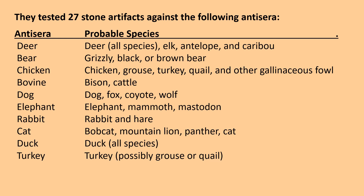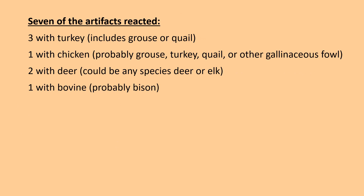They tested 27 of the stone artifacts against antisera listed on the left, with the probable species that would be flagged shown on the right. Not all of these are species that would have been found in South Carolina prehistorically. Seven of the artifacts reacted: three with turkey antiserrum, which includes grouse or quail; one with chicken antiserrum — chickens were not here, but it could signify grouse, turkey, quail, or other gallinaceous fowl; two with deer, which could signal deer or elk; and one with bovine antiserrum, probably bison.